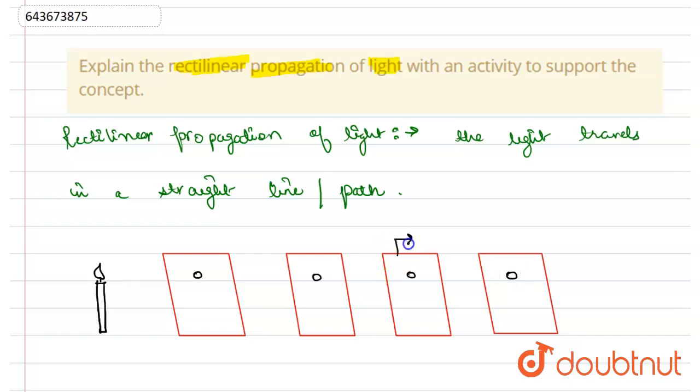These are wooden cardboards. When observed from here, we see that we are able to see the light ray because light travels in a straight path. But as soon as we bring this wooden cardboard above,